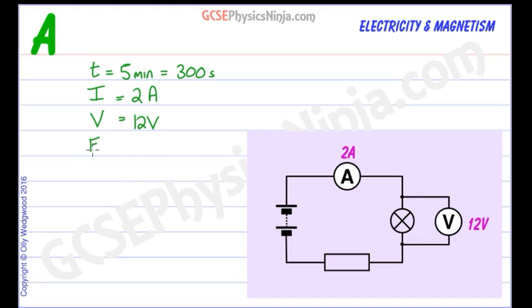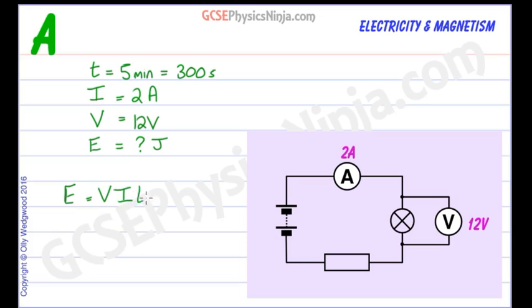We also know that the potential difference or the voltage drop across the lamp is 12 volts. The question is asking us for the energy transferred, and that will come out in joules because we're using standard units of volts, amps and seconds. The equation we're going to use is E equals VIT, or EVIT, which is quite a good way of remembering it.